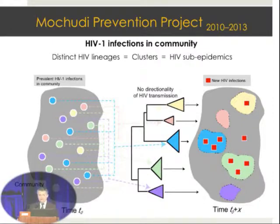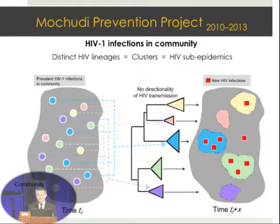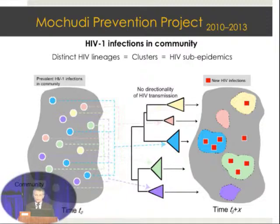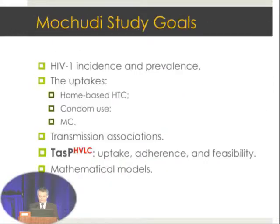The question then becomes: what proportion of infections occurred within the community versus outside? With this phylogenetic approach, we have some power to distinguish the contribution of PrEP versus TASP in this community. It also depends on where TASP is applied—if applied in a single isolated community, it's one story, but if applied across surrounding communities in a larger area, it could be completely different. This concept of sub-epidemics can help resolve these issues.